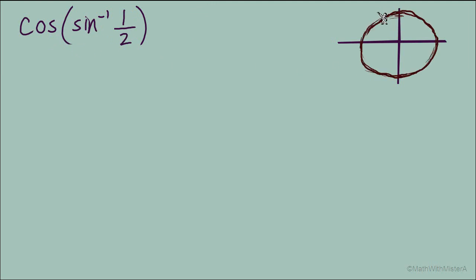On the unit circle, we'll find two points, two angles, where the sine equals 1 half. We'll find it at 30 degrees, or pi over 6 radians. Here we can see a y-coordinate that equals 1 half.